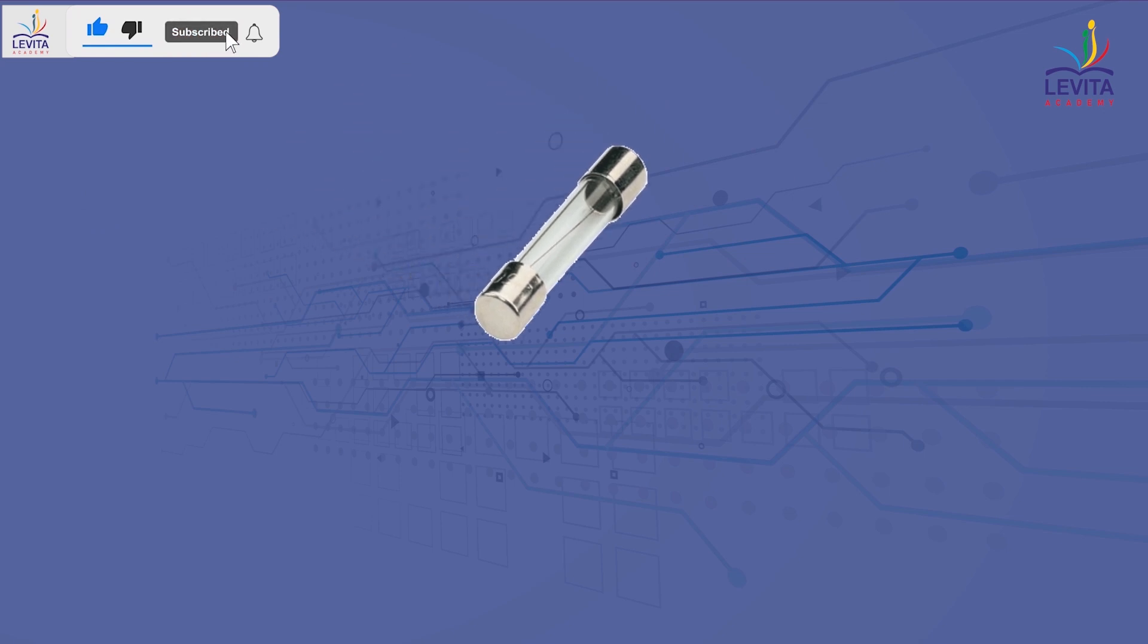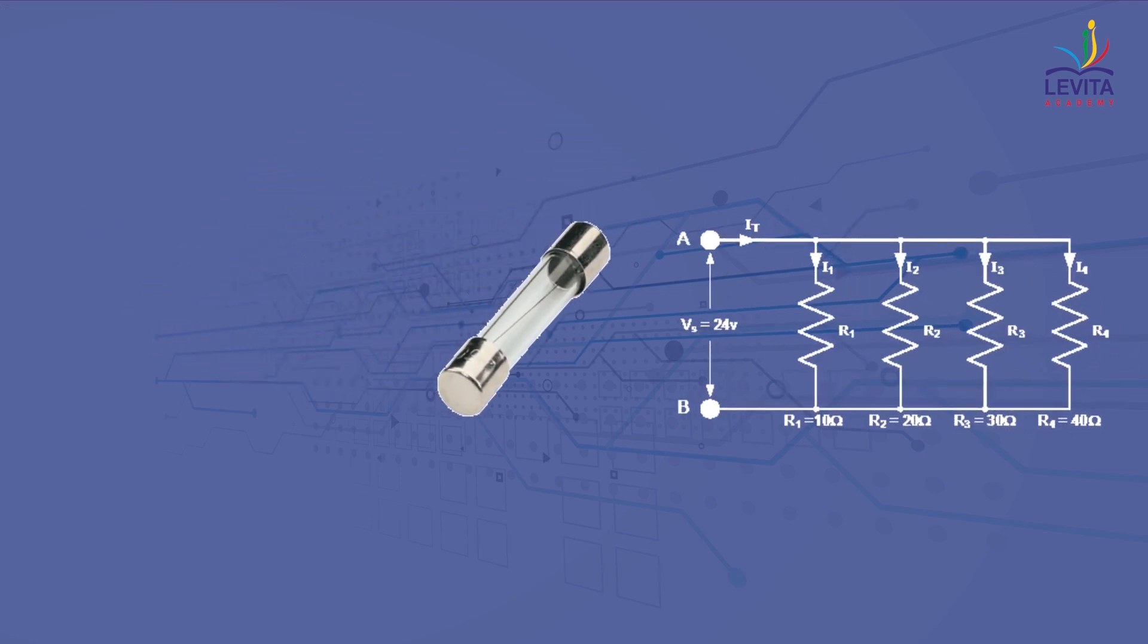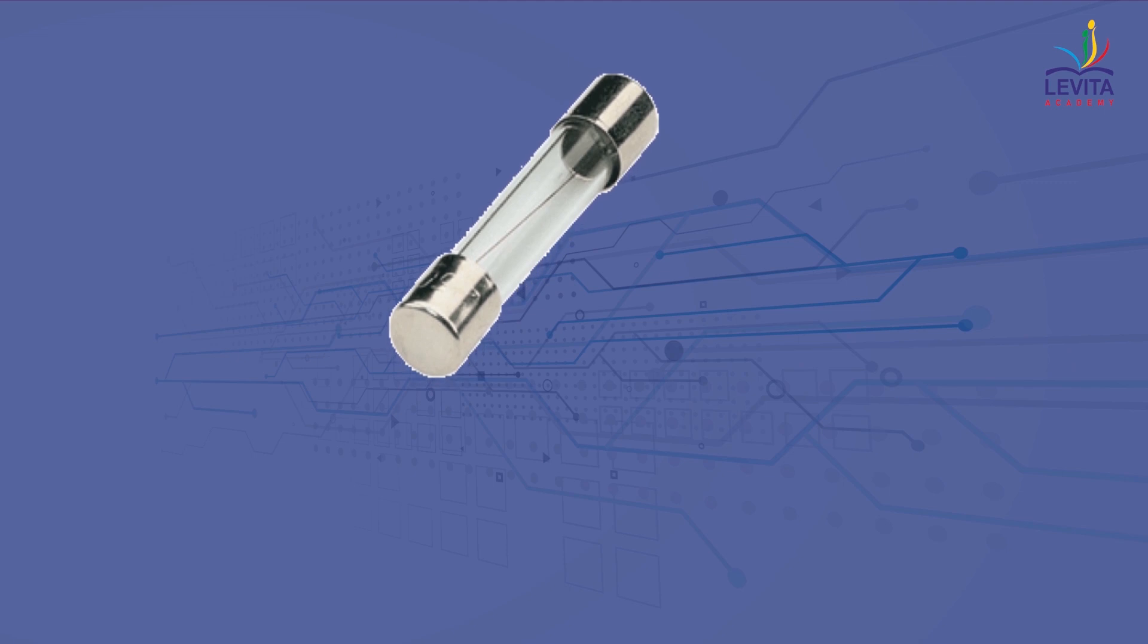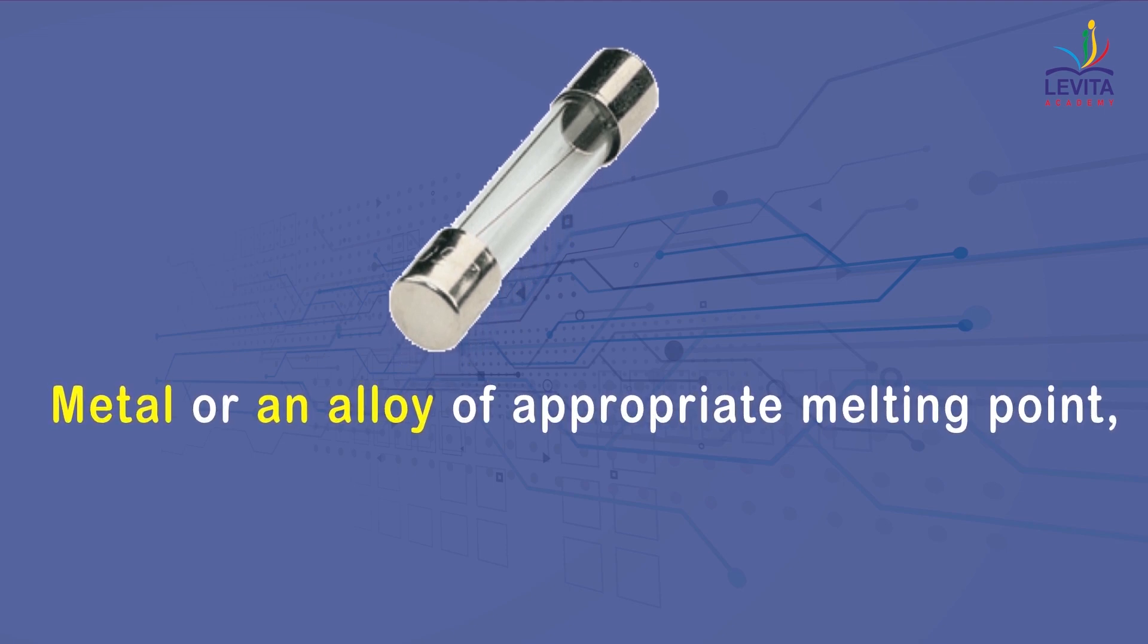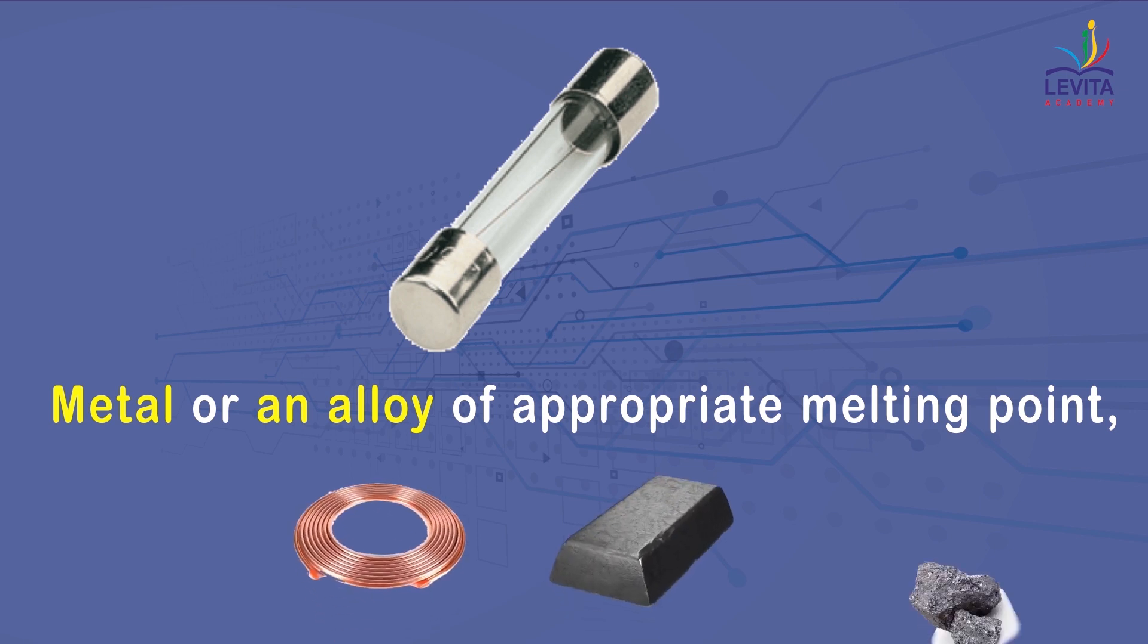The fuse is placed in series with the device and consists of a piece of wire made of a metal or an alloy of appropriate melting point. For example, aluminum, copper, iron, lead, etc.